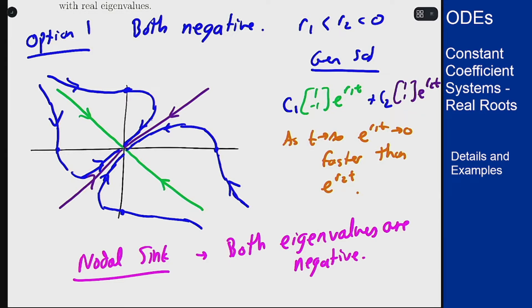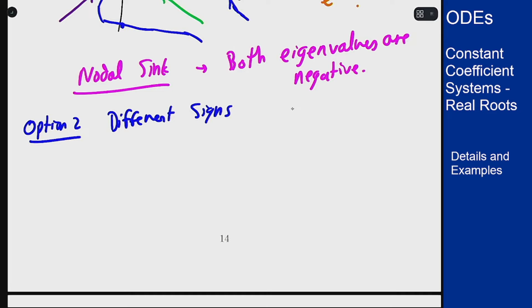Option two you can have here is when you have one negative and one positive eigenvalue. So we'll assume that r1 is less than zero which is less than r2 and again have the same general solution.